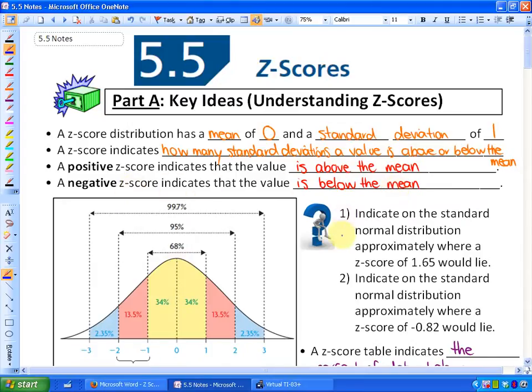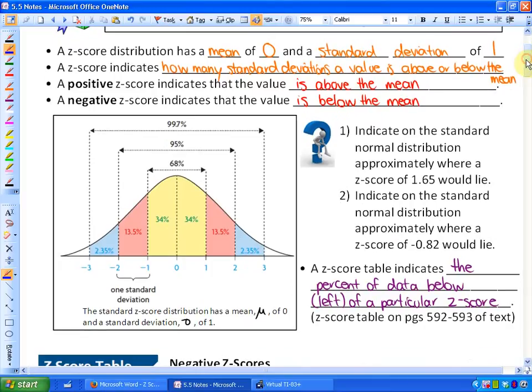Question number one here says, indicate on the standard normal distribution approximately where a Z-score of 1.65 would lie. So if you had a Z-score of 1.65, you would lie roughly 1.65 standard deviations above the mean.